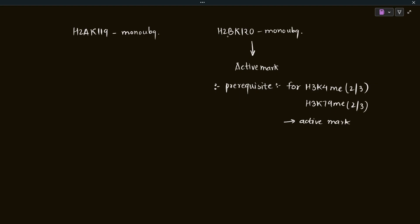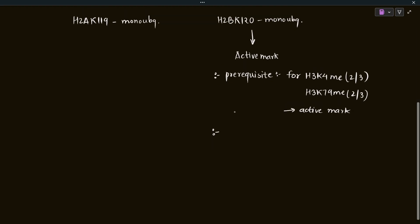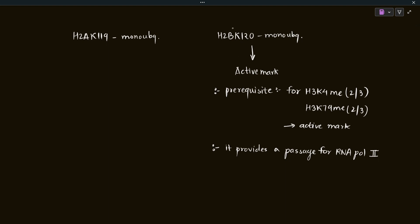H2B K120 ubiquitination is an active mark — it leads to gene activation. The other reason it is an active mark is that it provides a passage for RNA Polymerase II. In the nucleosomal template, it provides a passage for RNA polymerase to bind to the DNA, so now RNA polymerase can transcribe the DNA. Antagonistically, H2A K119 ubiquitination is a repressive mark.